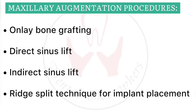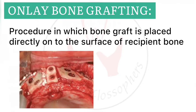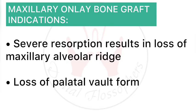Maxillary augmentation procedures include only bone grafting, direct sinus lift, indirect sinus lift, and ridge split technique for implant placement. Only bone grafting is a procedure in which bone graft is placed directly onto the surface of the recipient bone — maxilla or mandible. Indications include severe resorption and extremely atrophic maxillary alveolar ridge or loss of palatal vault form.